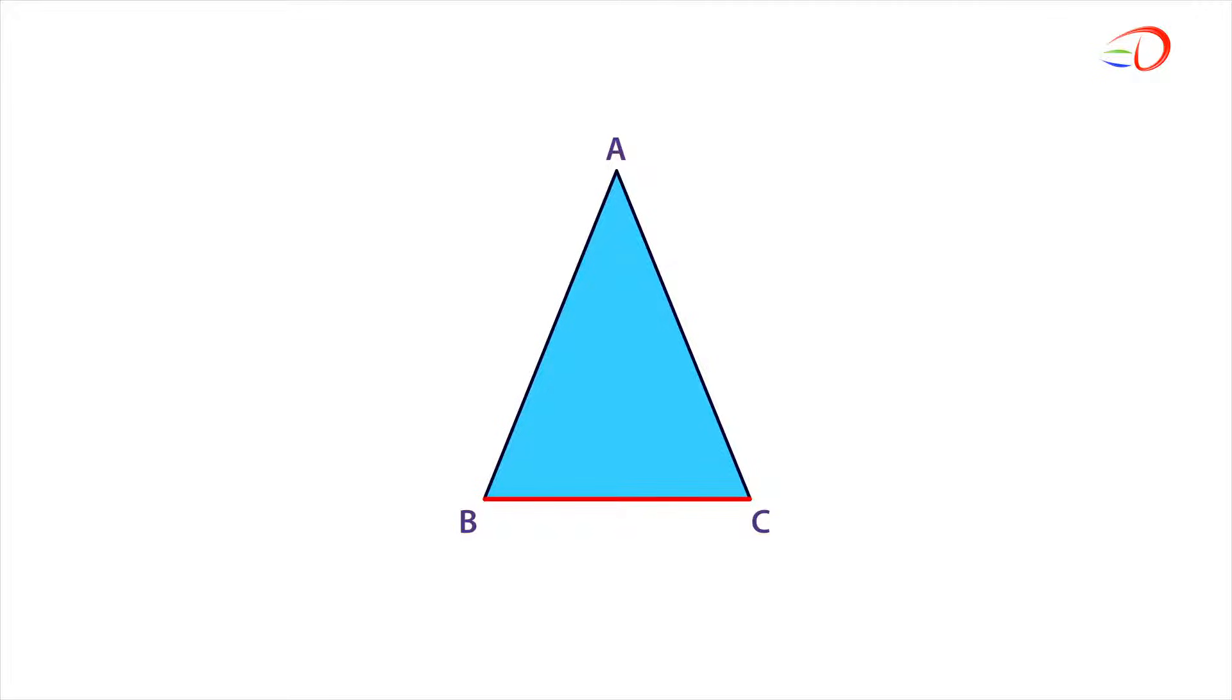To find the height, look for the vertex opposite the base. So, A is the vertex. Now, draw a perpendicular line from vertex A to the base BC to form a right angle. So when BC is the base, this is the height.